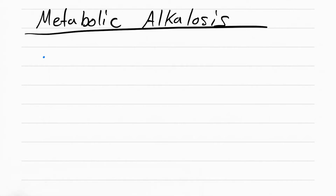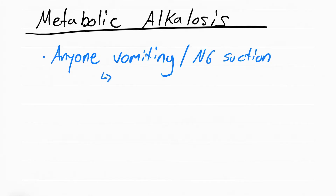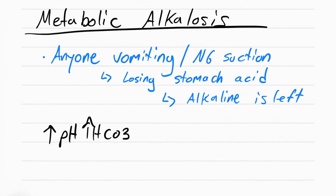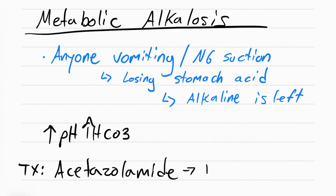Now we're moving on to metabolic alkalosis. The main patients who get metabolic alkalosis are anyone vomiting or being suctioned with an NG tube. Inside your stomach is acid, so if you vomit a lot or get suctioned, you lose all your acid — and what's left in the body is only alkaline. The pH will be up and the HCO3 will be up. Treatment involves treating the cause, but you can also give a diuretic such as acetazolamide to increase the amount of bicarbonate being excreted.